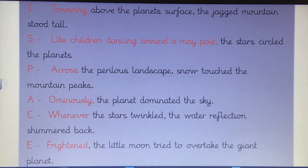So I've got for ING, I've got towering above the planet's surface, the jagged mountains stood tall. I don't have the comma after towering because I am describing the mountain here. And so I'm saying towering above the planet's surface, comma, the jagged mountains stood tall. Okay, you really need to think about where you're going to place that comma. Towering, yes, it is my ING opener, but I have got a bit more of that fronted adverbial there.